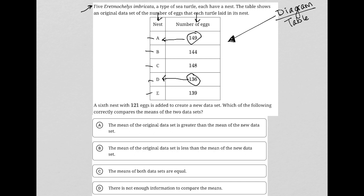So the question says five Eretmochelys imbricata, so I'm not going to waste my time trying to pronounce that properly. A type of sea turtle. So five sea turtles, each have a nest. The table shows an original data set of the number of eggs that each turtle laid in its nest. Okay, so the table is pretty straightforward. These are turtle eggs and turtle nests.